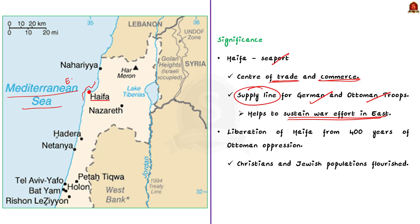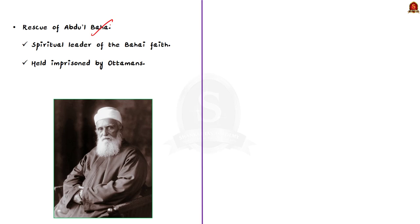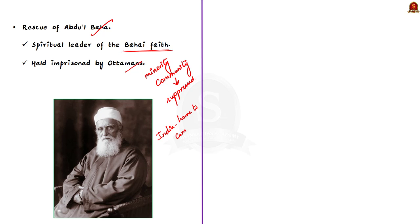The capture of Haifa by the Indian forces led to the blocking of supply chains and the end of the Ottoman Empire — this is the first significance. Secondly, the liberation of Haifa from 400 years of Ottoman oppression allowed the Christian and Jewish populations to grow and flourish. Thirdly, the battle rescued Abdul Baha, the spiritual leader of the Baha'i faith, who was held prisoner by the Ottomans and whose minority community was suppressed. By capturing Haifa, India helped the community gain its rights and freedom by rescuing its leader and followers. Note that India is now home to the largest Baha'i community in the world.